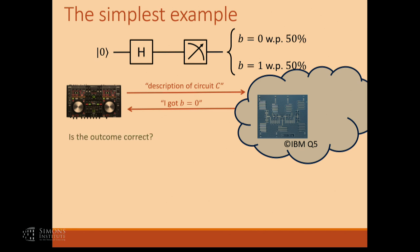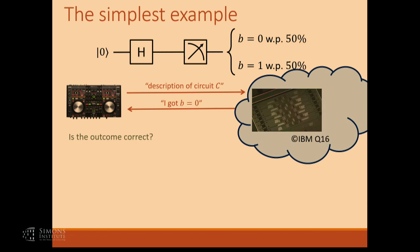Once you've set it up this way, there are a number of questions you need to ask. The first question would be: is this outcome I'm observing correct or not? In the case of a simple circuit like this, I can check — I can estimate what the distribution should be and check it against the distribution reported by IBM. But that's because this is a pretty simple small computer and my circuit was very simple, so I can just do the computation by hand.